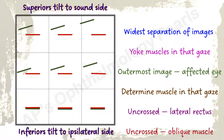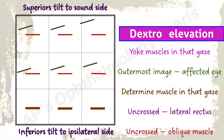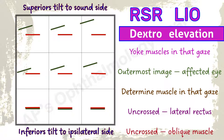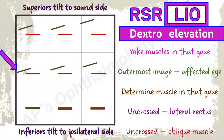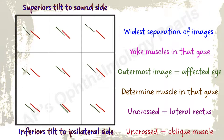Here, maximum vertical separation of images is in dextro elevation. The yoke muscles acting in dextro elevation are the right superior rectus and the left inferior oblique. Green is the outermost image, so the left eye is involved — this is a left inferior oblique palsy. This is an uncrossed diplopia, so the oblique checks out. The tilt is towards the left or ipsilateral side, so the inferior checks out.